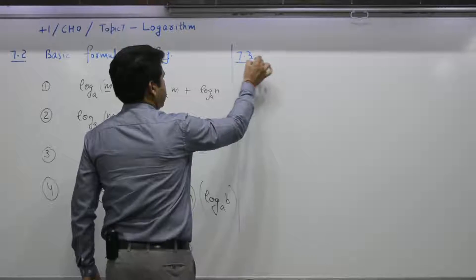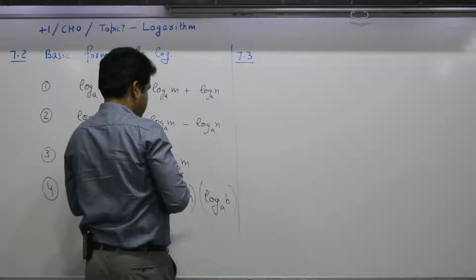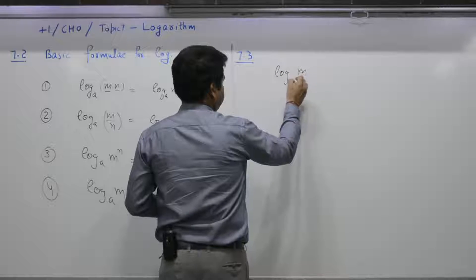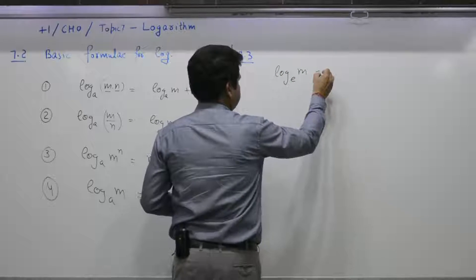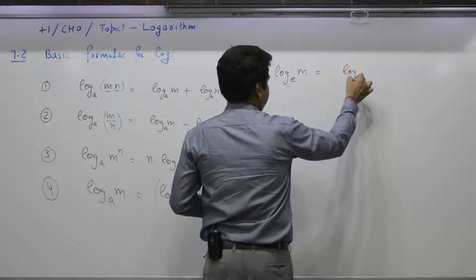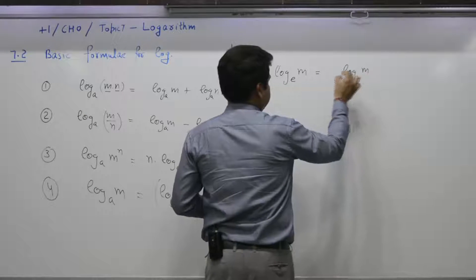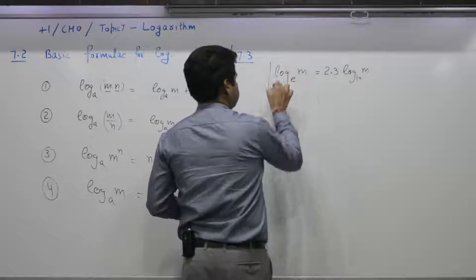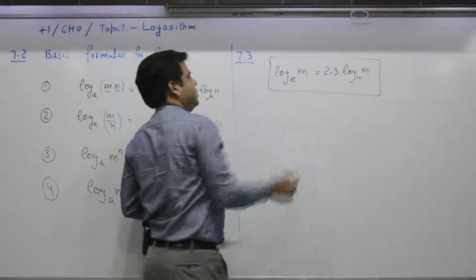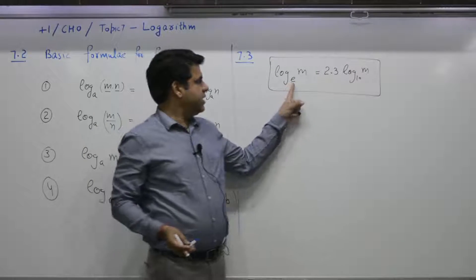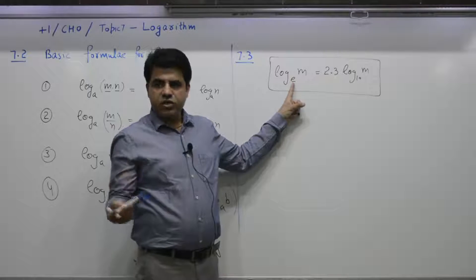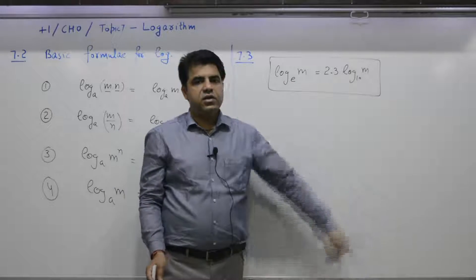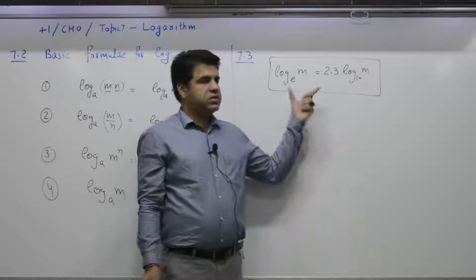Third point: log of m to the base e is equal to log of m to the base 10 multiplied by 2.3. In physics numericals, you will use log to the base e and log to the base 10. The two are connected by a factor of 2.3.